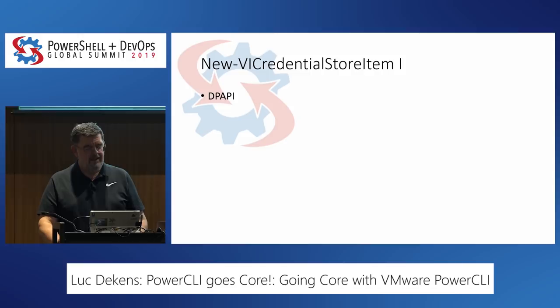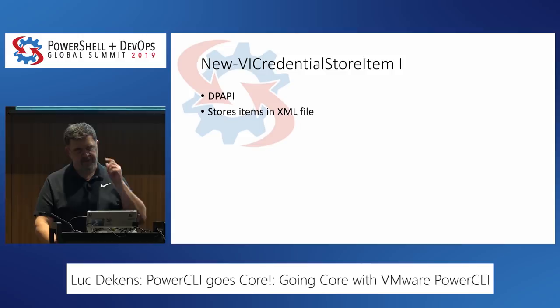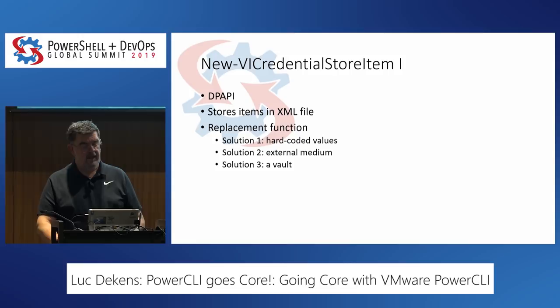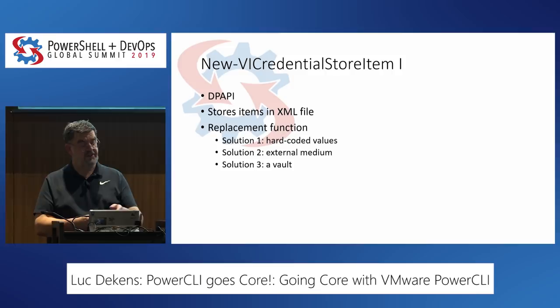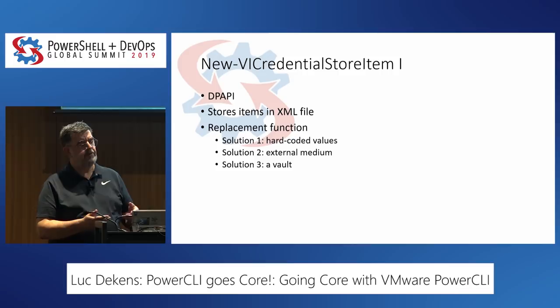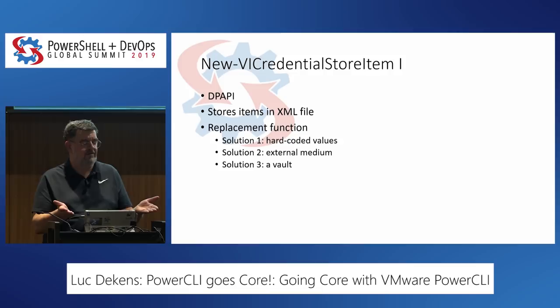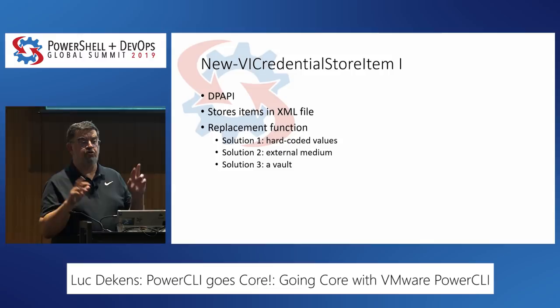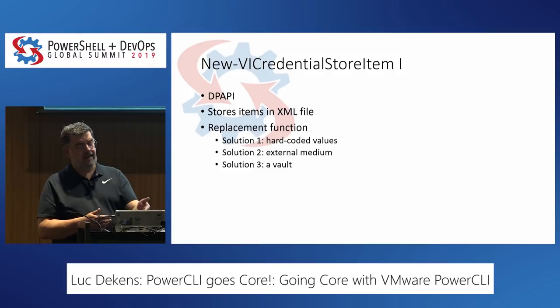Recapping what the credential store does: it uses the DPAPI — a Windows collection of APIs — to store credentials in an external file that can only be read by the same user on the same computer. That's a limitation of DPAPI. How can we replace it? Now that we have the skeleton proxy command, we can inject our own code. There are multiple possibilities: if you want it quick and dirty, hard-code your values — most security officers will have a heart attack at that, but it works. Another option is external file storage with some encryption depending on the platform. The third and ideal solution is to use a vault.